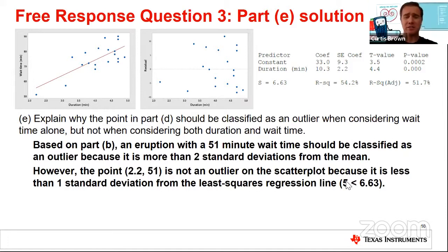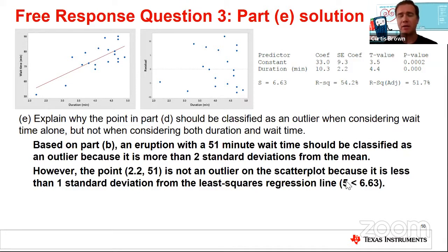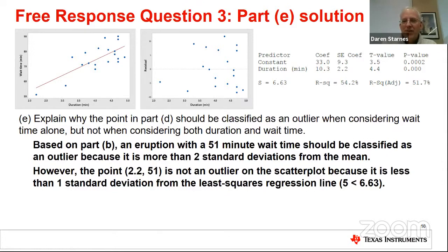A question: would students need to reference the standard deviation or just talking about the size of the residual — would that be sufficient for full credit? Credit would be given to a student who talked about the size of that residual relative to the other residuals on the graph. One way is to reference standard deviation units; another is to simply compare to the other residuals. There needs to be at least some reference to the rest of the data to get full credit for part E.